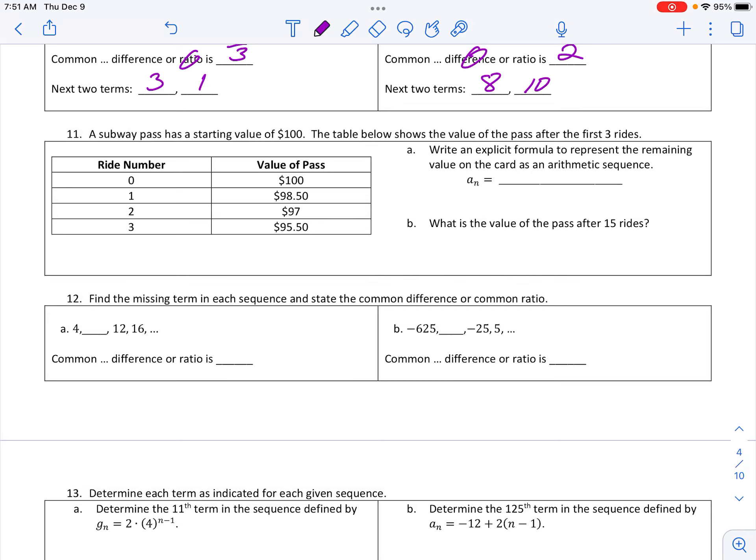Okay, so number 11 here. We have a pass with a starting value of $100. The table below shows the value of the passes after the first three rides. Now when I look at this, the ride number is going to be a little bit different than what we've been talking about as the term number. So I'm going to add in just a little extra spot right here that is called my term number.